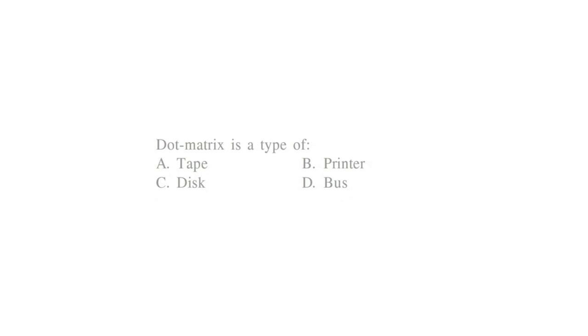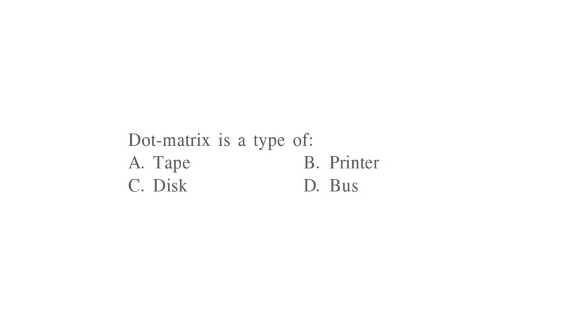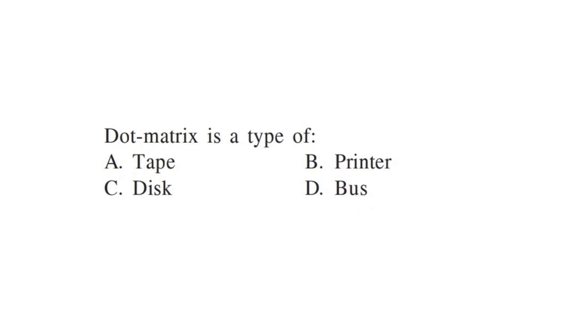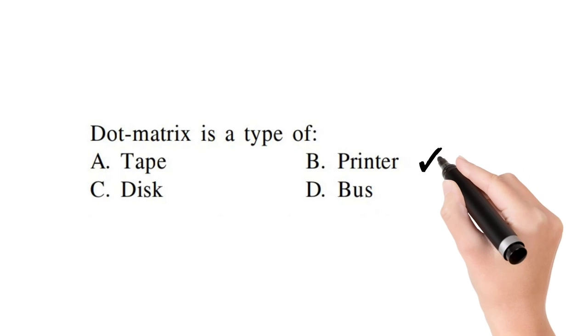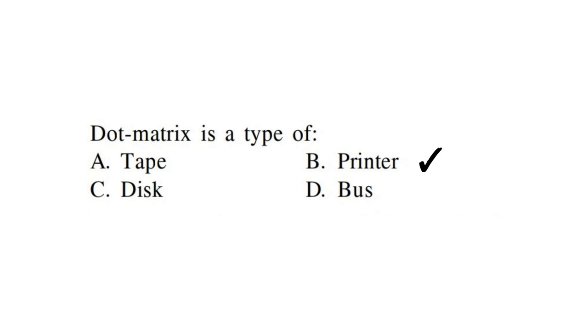Dot matrix is a type of what? Tape, disk, bus, or printer? Dot matrix is a printer which we have already studied. So the correct answer will be printer.